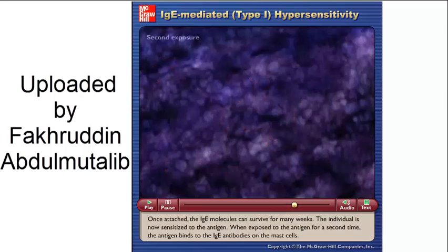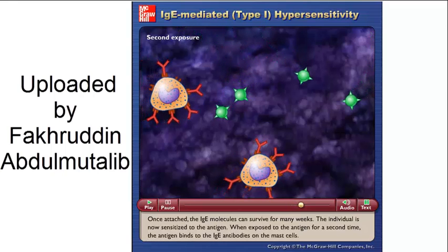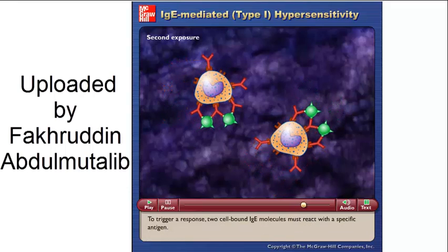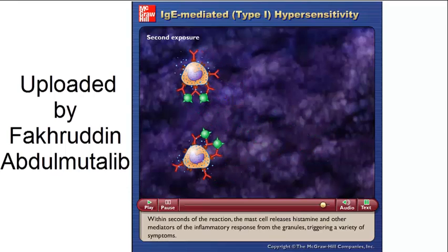When exposed to the antigen for a second time, the antigen binds to the IgE antibodies on the mast cells. To trigger a response, two cell-bound IgE molecules must react with a specific antigen. Within seconds of the reaction, the mast cell releases histamine and other mediators of the inflammatory response from the granules, triggering a variety of symptoms.